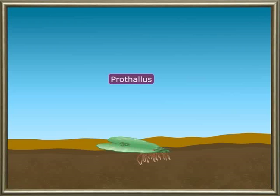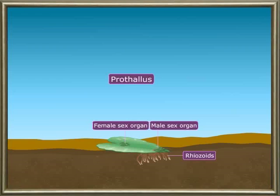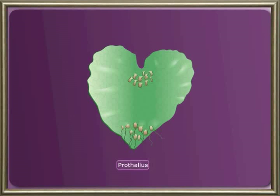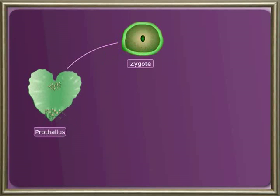Each filament develops into a heart-shaped structure called the prothallus, which is fixed to the soil with the help of rhizoids. It is a small independent plant. The prothallus contains male and female sex organs, so the prothallus is the gametophyte of the fern plant. It produces male and female gametes. The male gametes are released into the surrounding water and the female gametes are fixed to the plant. The male and female gametes fuse to produce a zygote, which develops and gives rise to a young sporophyte that later develops into a fern plant.